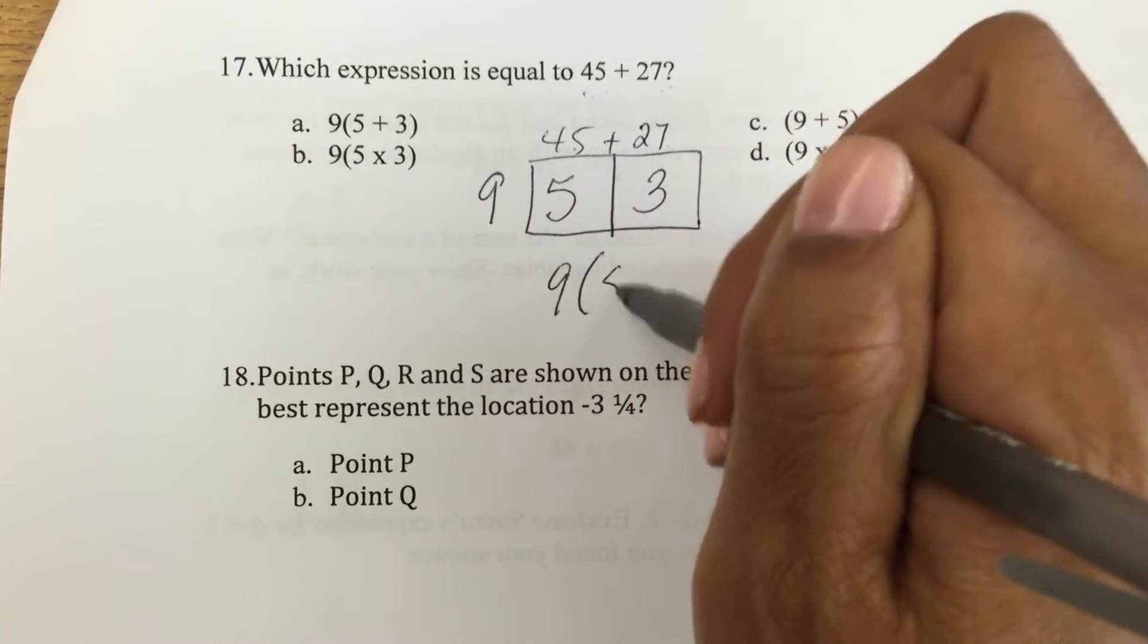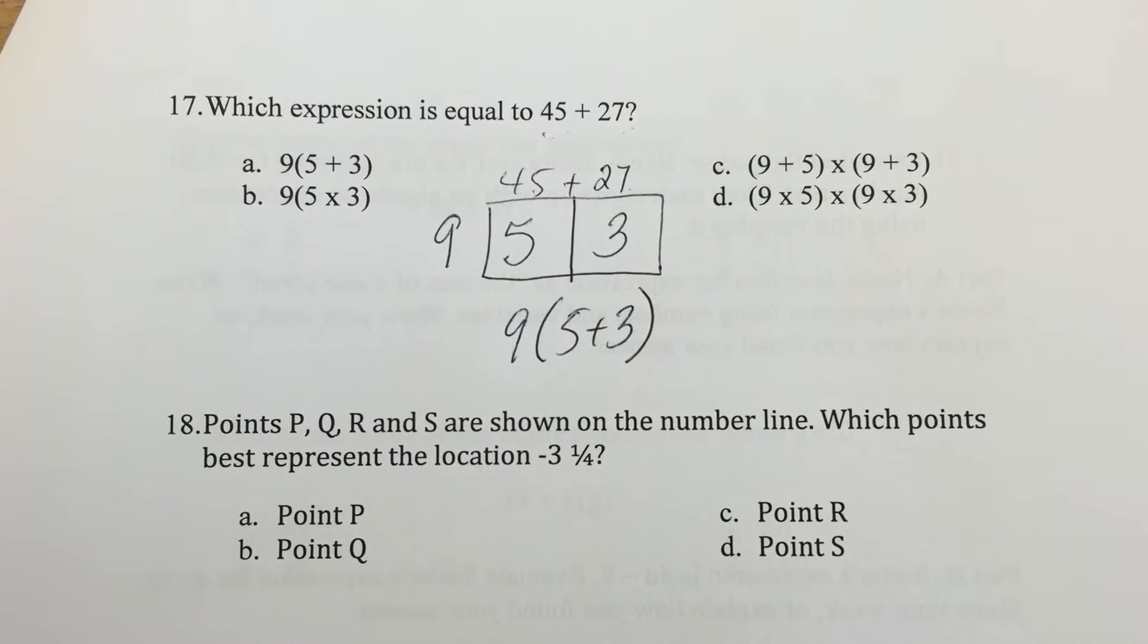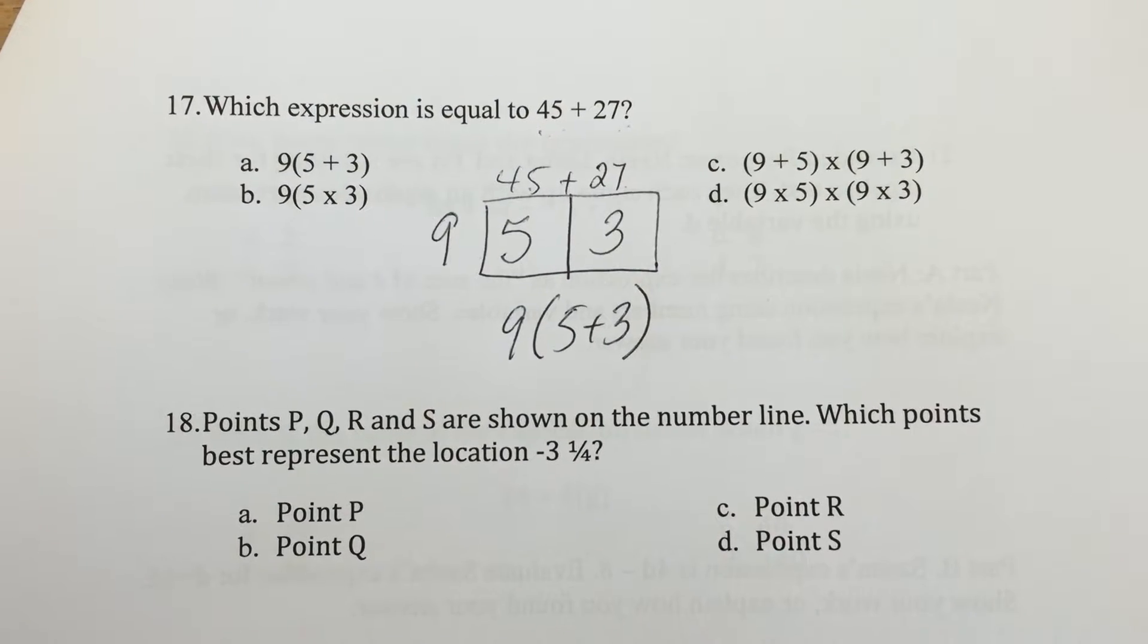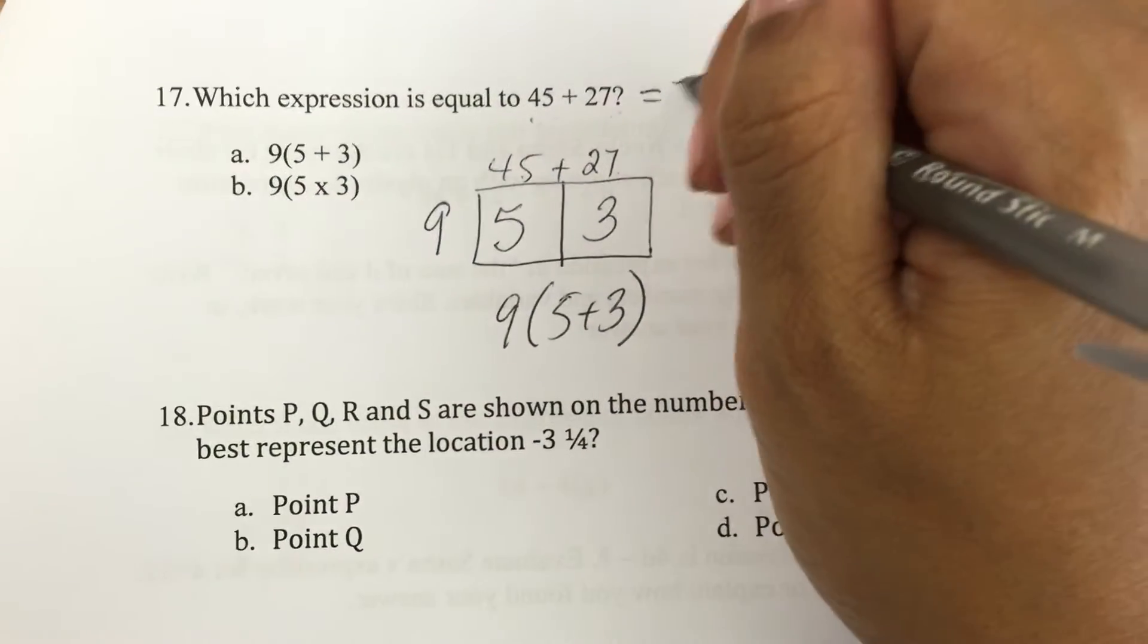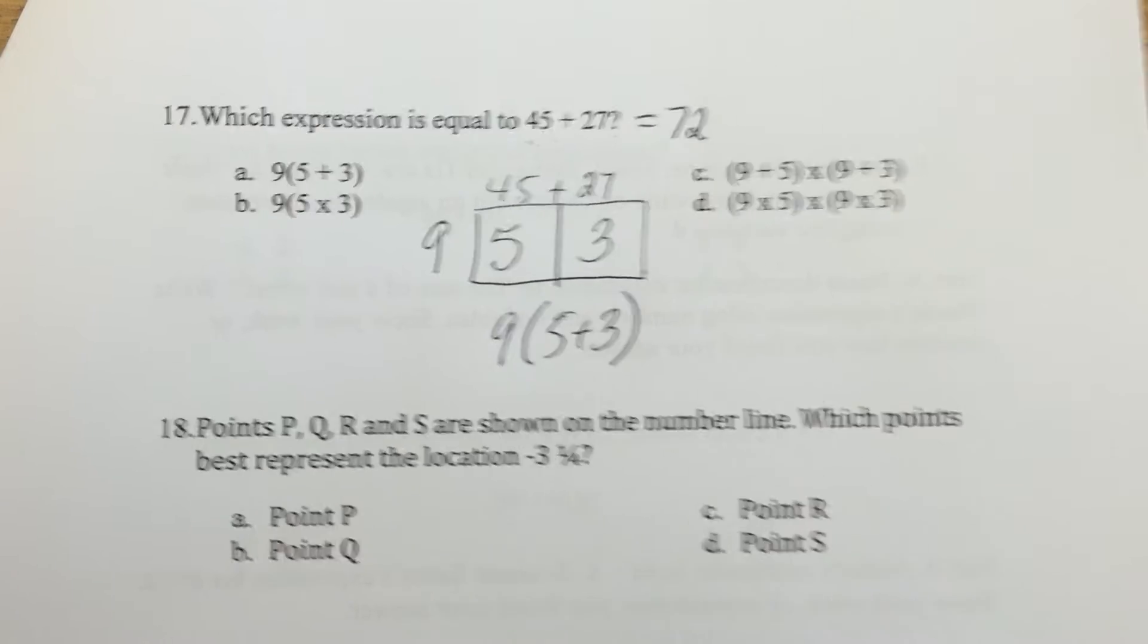So my answer is 9 times 5 plus 3. But if you didn't remember that, you could have just added them up together and seen which one has the exact same number. So if I added these two, I would have gotten 72.